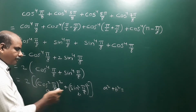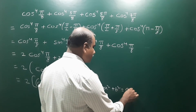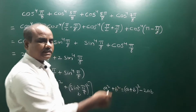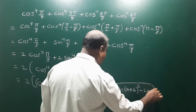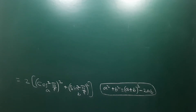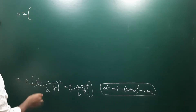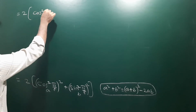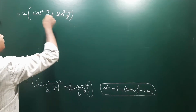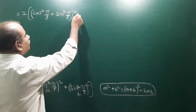Applying the formula A² + B² = (A + B)² - 2AB, we get 2 × [(cos²(π/8) + sin²(π/8))² - 2·cos²(π/8)·sin²(π/8)]. We know that cos²θ + sin²θ = 1, so cos²(π/8) + sin²(π/8) = 1.